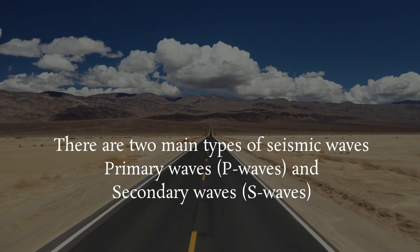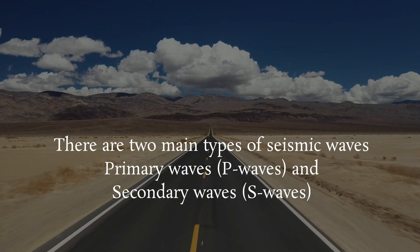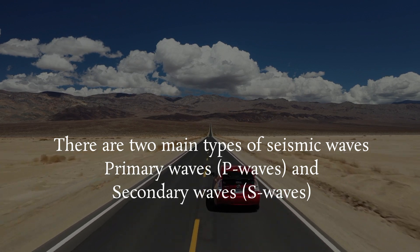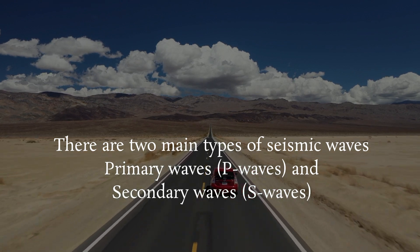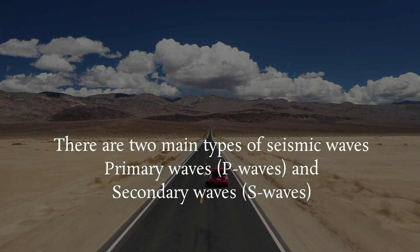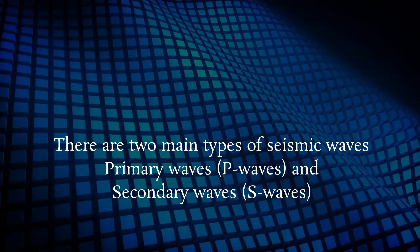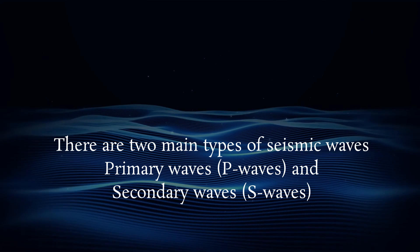There are two main types of seismic waves: primary waves, or P waves, and secondary waves, or S waves.